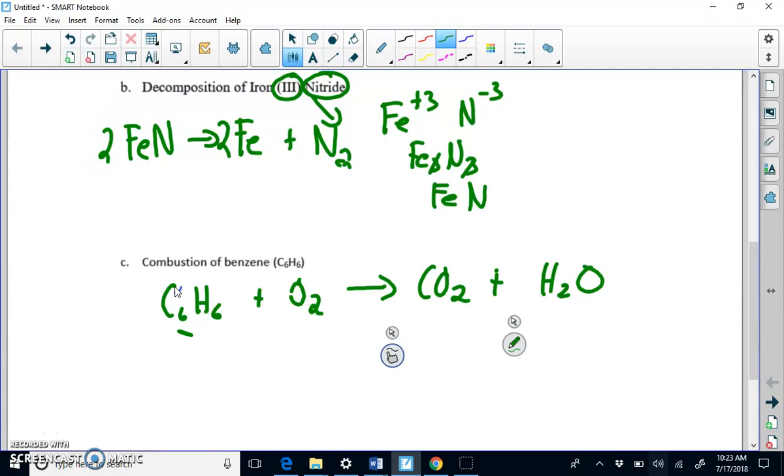So now we need to balance. And with combustion reactions, they're harder to balance. You always have to balance carbon and hydrogen first. Always carbon hydrogen first. So if we take a look, there are 6 carbons here. So we have to put a 6 here. And then there are 6 hydrogens here. And there's 2 here. To make that 6, we have to put a 3, because 3 times 2 is 6. Now we've got to balance the oxygens. The oxygens are difficult because there's oxygens in both compounds.